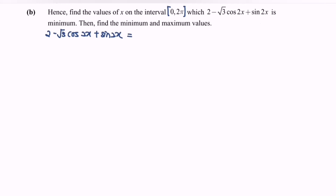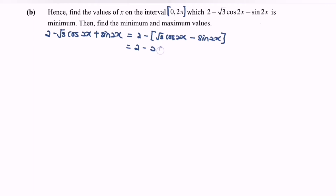I will do some modification by factoring out negative 1. So 2 minus (√3 cos2x + sin2x) becomes 2 minus bracket negative(√3 cos2x minus sin2x), which becomes 2 minus(−2 cos(2x + 30°)) or 2 cos(2x + π/6).